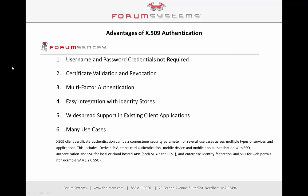Some of the advantages of using X509 authentication for APIs and single sign-on include: username and password not required, which has many obvious benefits; certificate validation and revocation, where signed client certs are validated and can easily be revoked; multi-factor authentication, where X509 client authentication is often the first factor in a multi-factor authentication scheme; and easy integration with existing identity stores. Most identity platforms, for example Active Directory, already contain user attributes for X509 certificates.